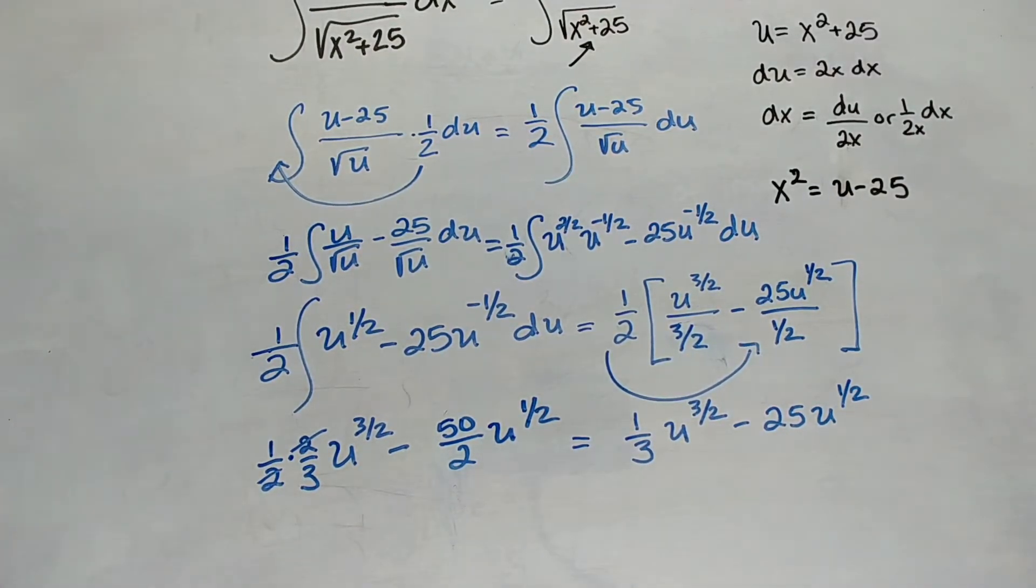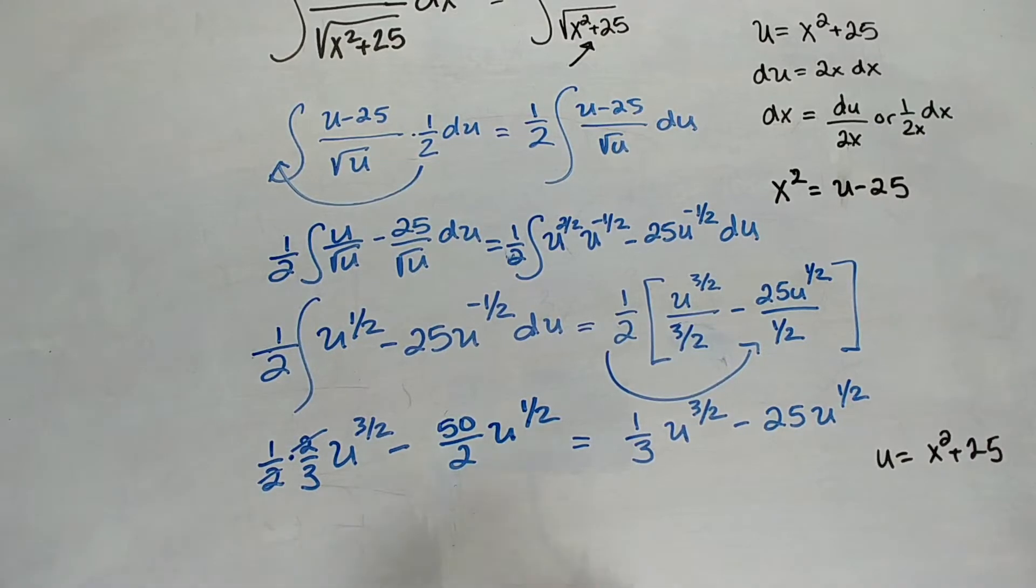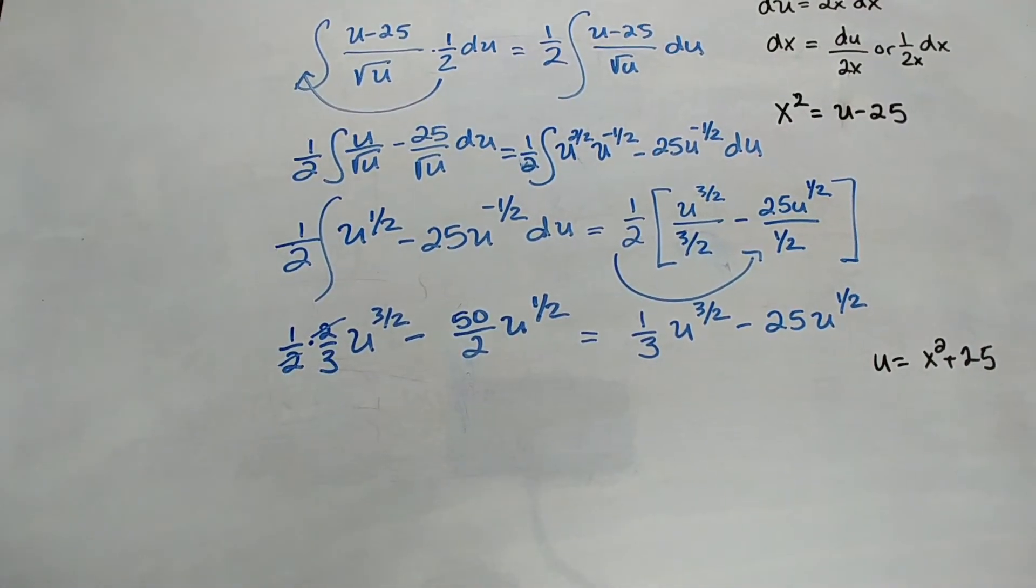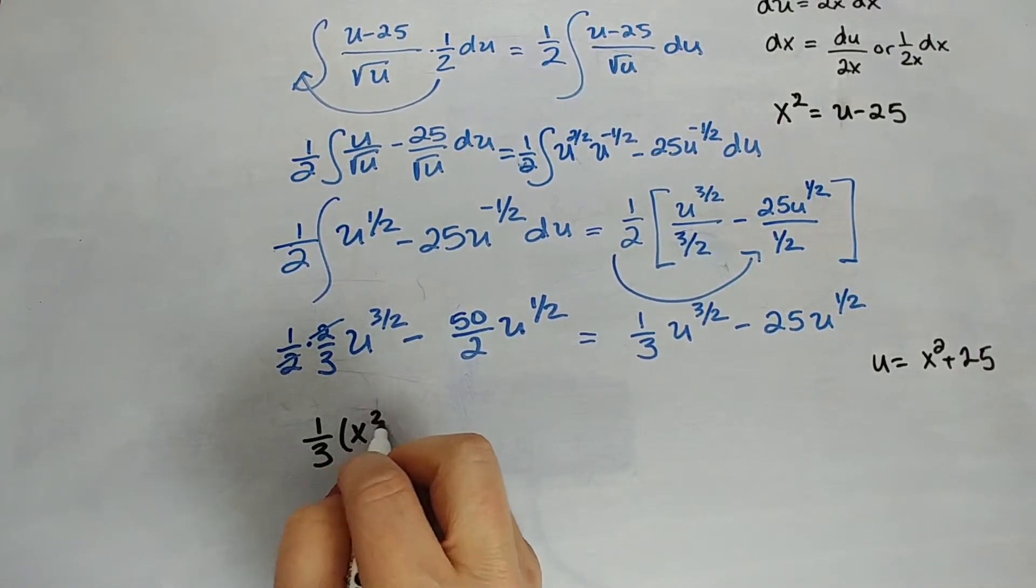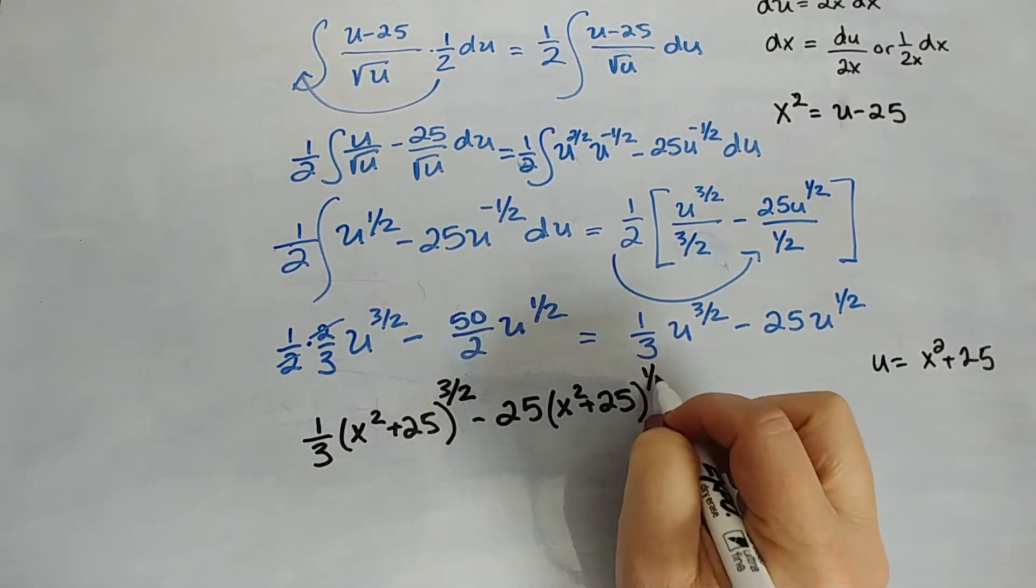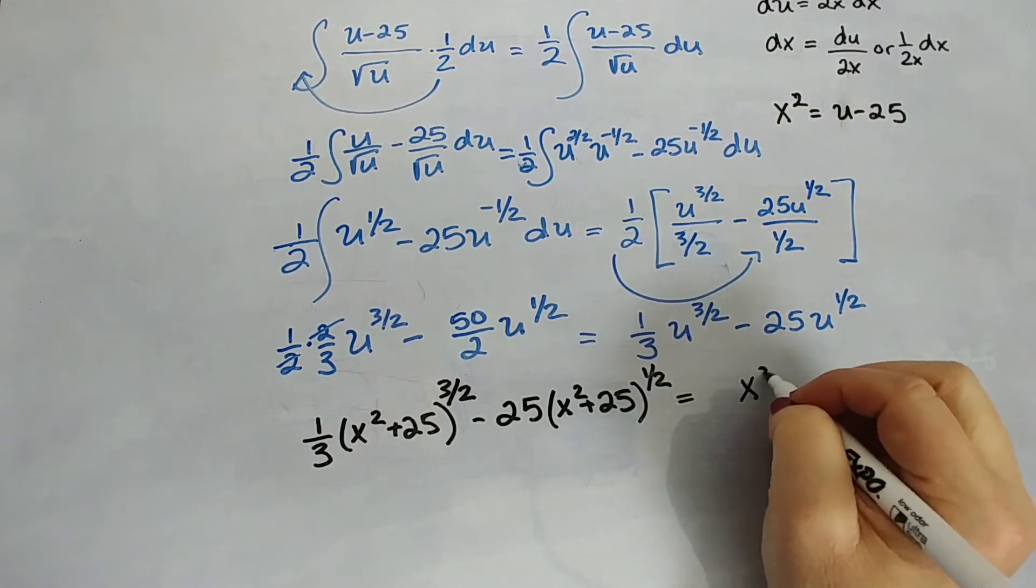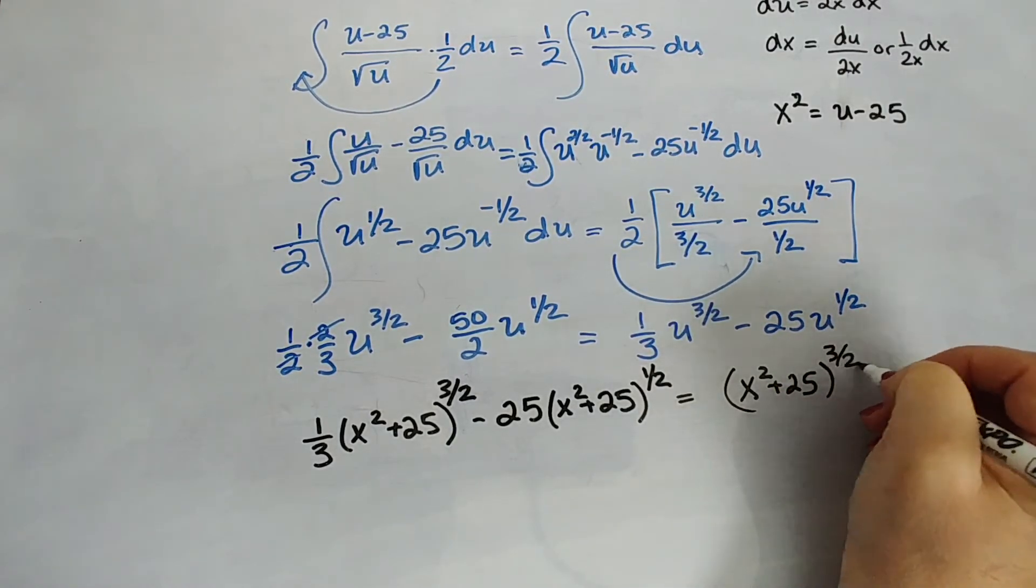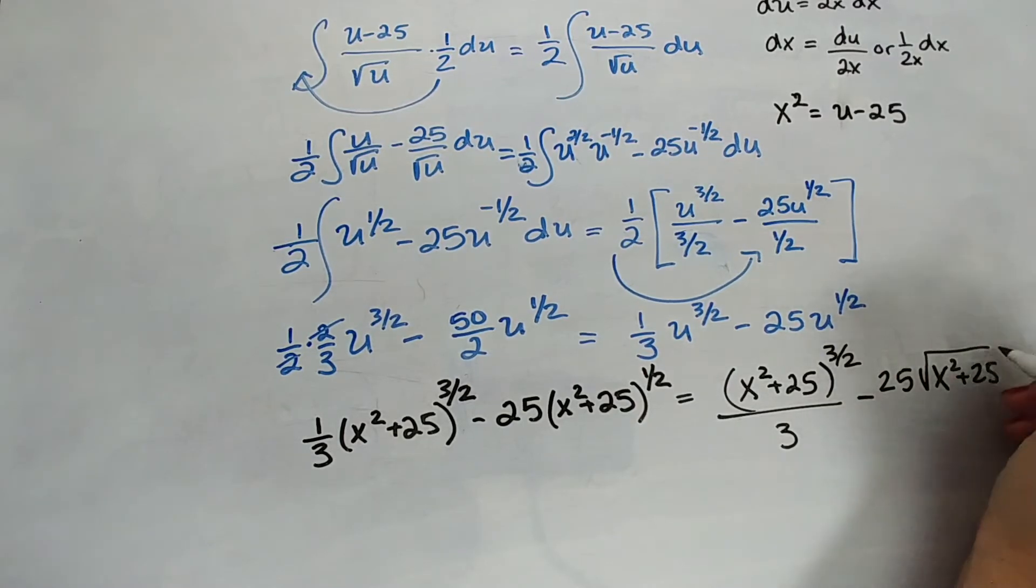Okay, you know the drill at this point. We didn't have u when we started this problem. We can't have u when we finished this problem, so we have to substitute in for u. Let's remember that u was equal to x squared plus 25. Thanks, Allie, for sending this problem in. So we have 1 third, x squared plus 25 to the 3 halves all over 3, minus 25 times the square root of x squared plus 25.